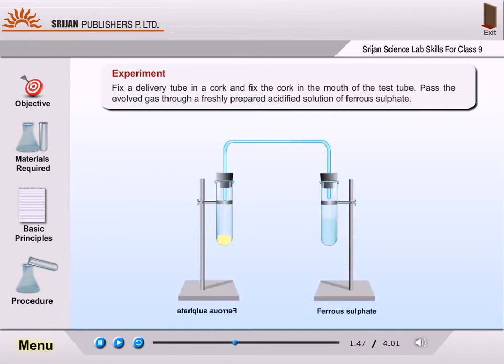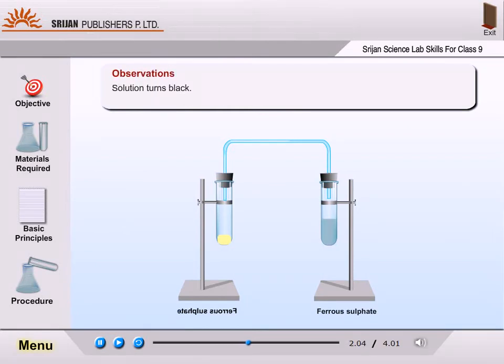Fix a delivery tube in a cork and fix the cork in the mouth of the test tube. Pass the evolved gas through a freshly prepared acidified solution of ferrous sulfate. Solution turns black.